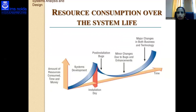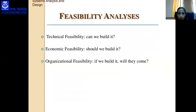Maintenance is performed for two reasons: removing software errors and enhancing existing software. A diagram shows resource consumption over the system life cycle — the amount of resources, time, and money consumed across system development, minor changes, and major changes in both business and technology.